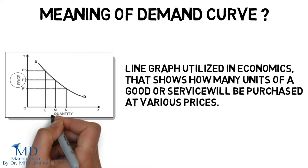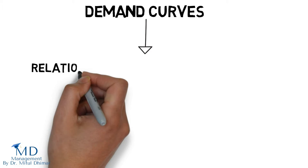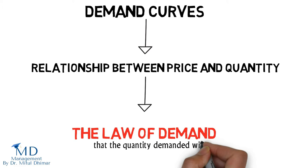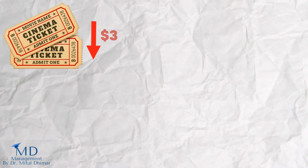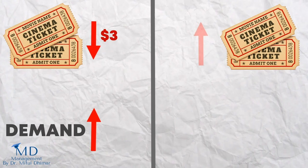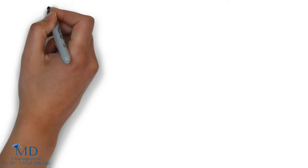Demand curves are used to determine the relationship between price and quantity and follow the law of demand, which states that the quantity demanded will decrease as the price increases. For example, if movie ticket prices declined to $3 each, demand for movies would likely rise. If movie ticket prices start increasing, then its demand will start declining. In addition, demand curves are commonly combined with supply curves to determine the equilibrium price and equilibrium quantity of the market.